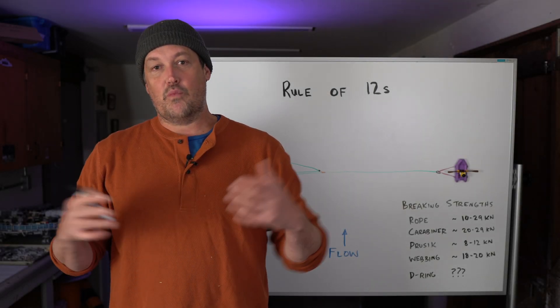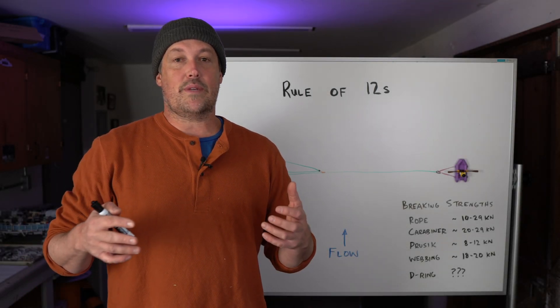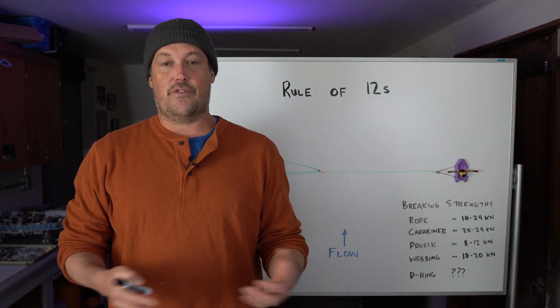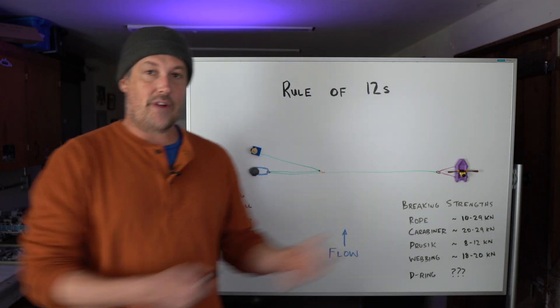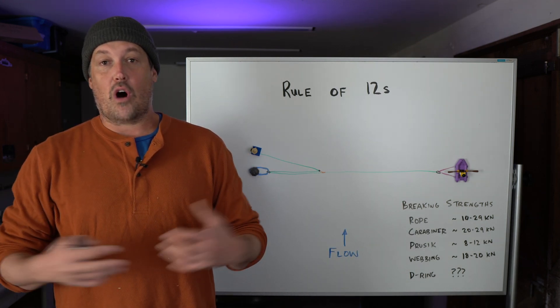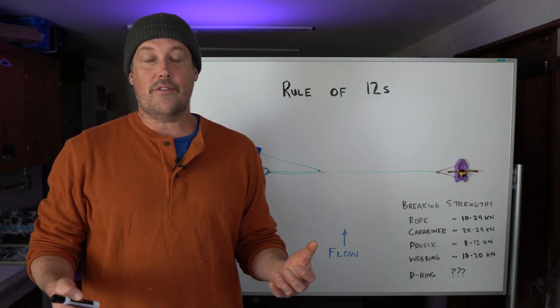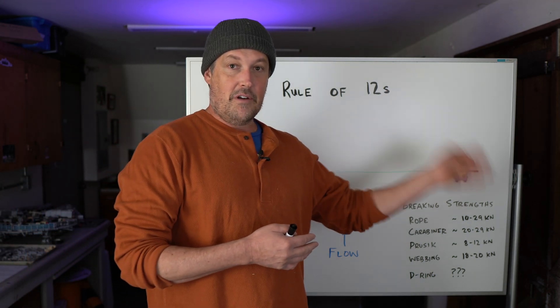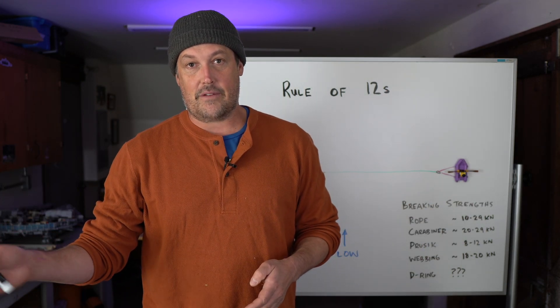In this episode, I want to talk about the rule of 12s, something we use when deciding how many people to pull when using mechanical advantage for whitewater rescue. When we're pulling a raft off a rock or pulling a kayak out, I like to follow what is called the rule of 12s. The idea is we never pull with more than 12 when we multiply the number of people by the mechanical advantage.